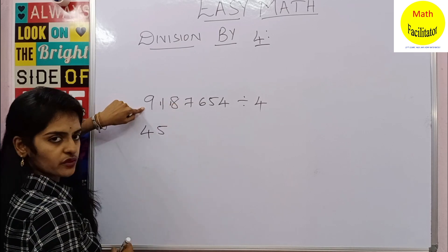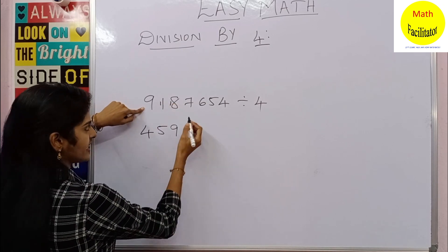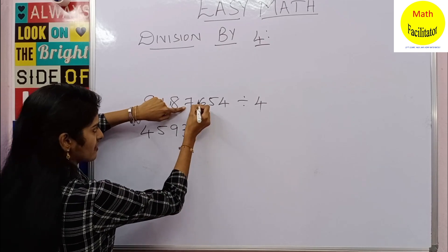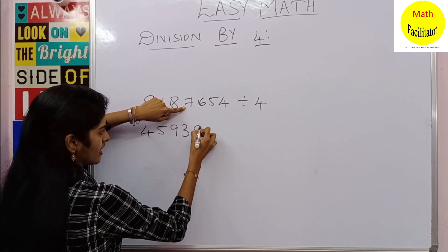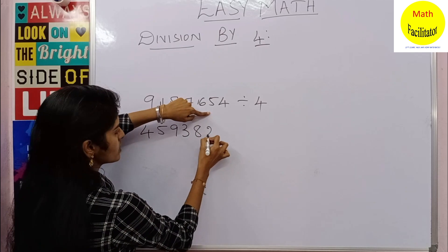So it is nothing but two fours are eight, so you are left out with one. Two fives are ten, again you are left out with one, reminder. Two nines are eighteen. Two threes are six, you are left out with one, so this is 16 now. Two eights are sixteen. Two twos are four, you are left out with one, and two sevens are fourteen, clear.